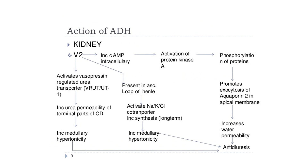The action of ADH in the kidney is mainly through V2 receptors via three mechanisms: first, increasing intracellular cAMP activates protein kinase A, leading to phosphorylation and exocytosis of aquaporin-2 into the apical membrane, increasing water permeability and causing anti-diuresis. Second, stimulation of V2 receptors in the ascending limb of the loop of Henle activates the sodium-potassium-chloride co-transporter, increasing medullary hypertonicity and anti-diuresis. Third, activation of the vasopressin-regulated urea transporter increases urea permeability of the terminal collecting ducts, again increasing medullary hypertonicity and anti-diuresis.